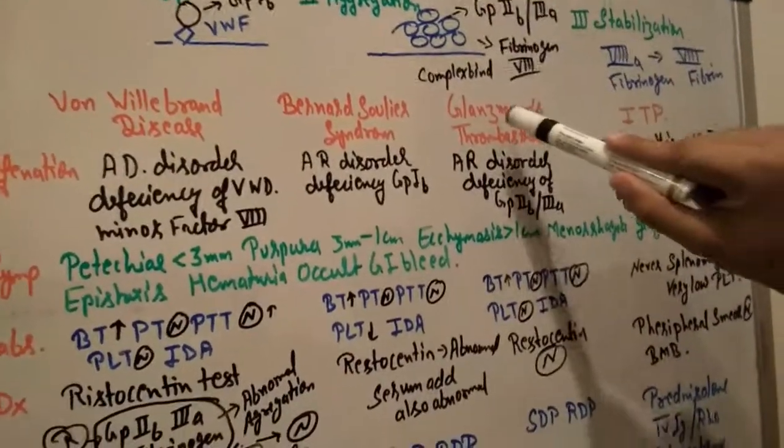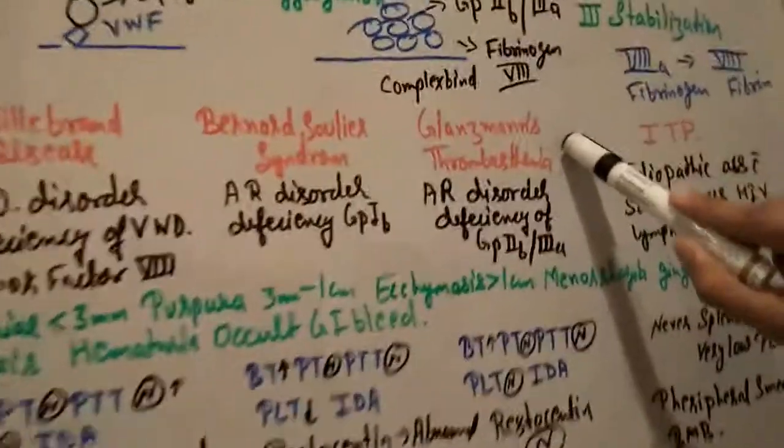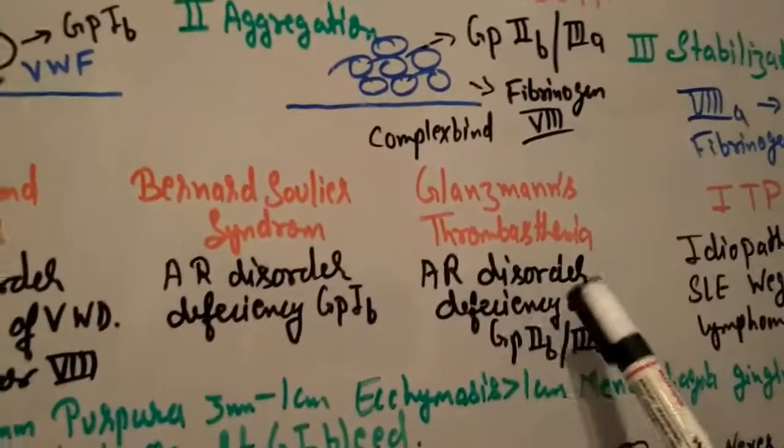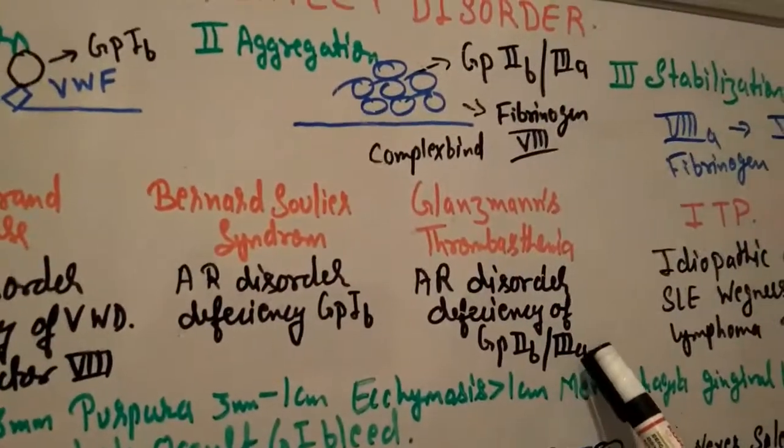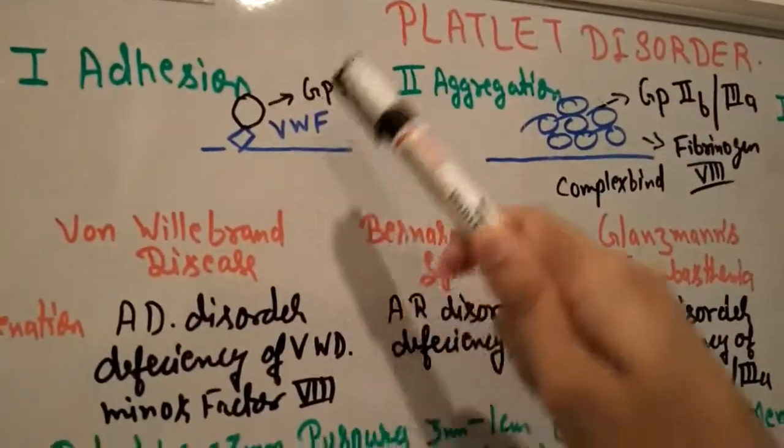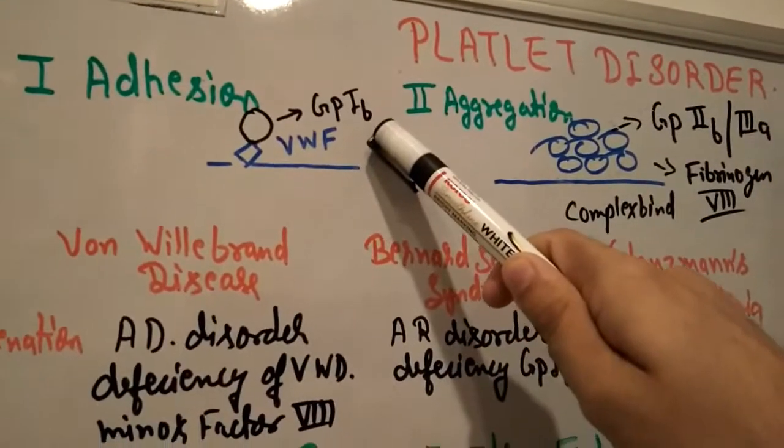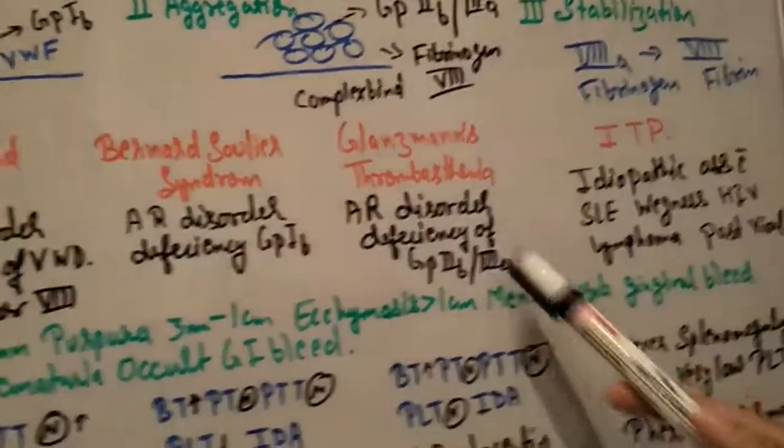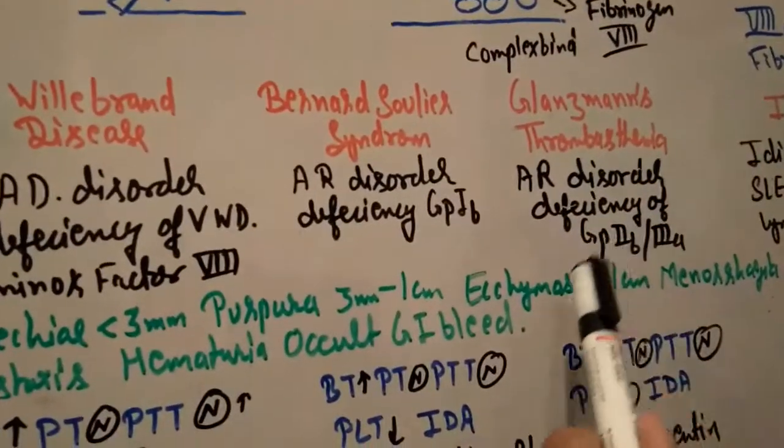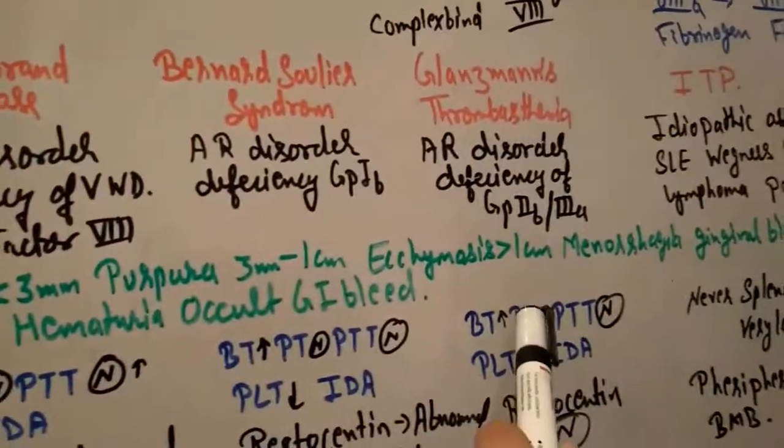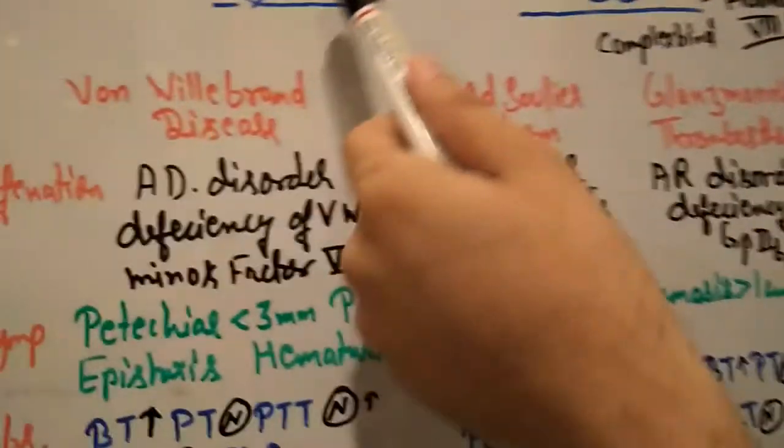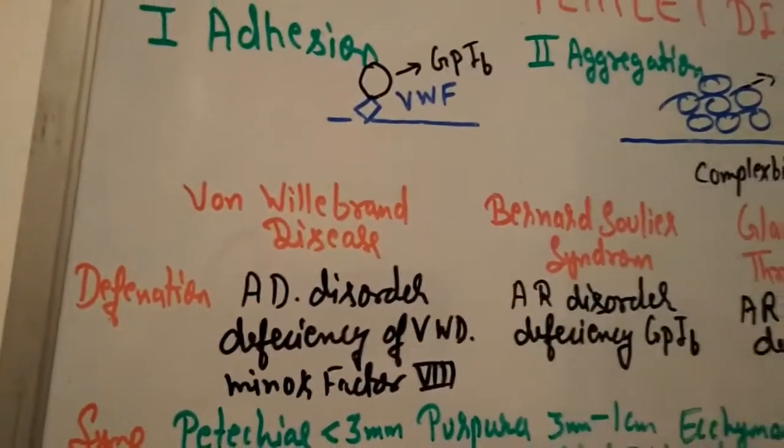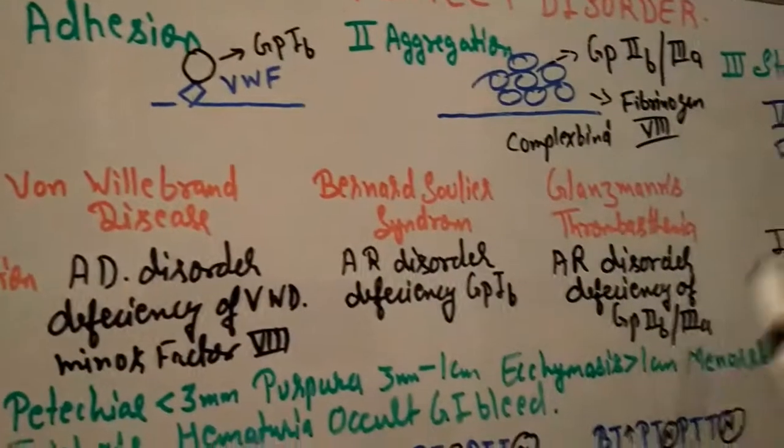Another one is Glanzmann thrombasthenia. It's an autosomal recessive disorder. There is deficiency of 2B and 3A. Von Willebrand factor is normal, glycoprotein 1B is normal, but there's deficiency of 2B, 3A, and fibrinogen factor. Bleeding time increases because adhesion occurs but no aggregation, no complex binding.